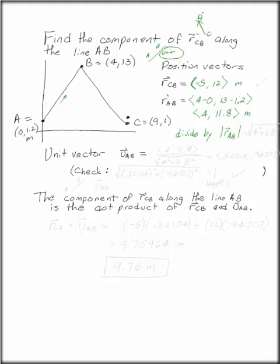So first of all, what is that? This is the square root of the components, 4 squared plus 11.8 squared. That gives you 4 and 11.8 as your components divided by the square root of 4 squared plus 11.8 squared, which is .32104 and .94707.